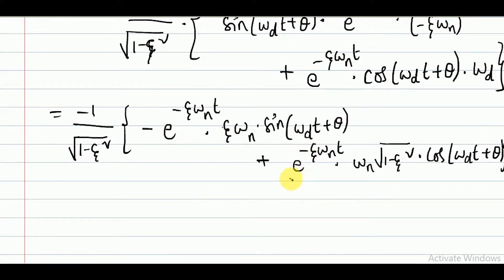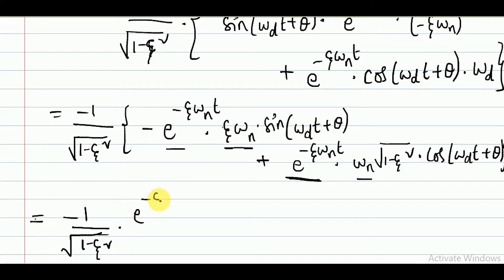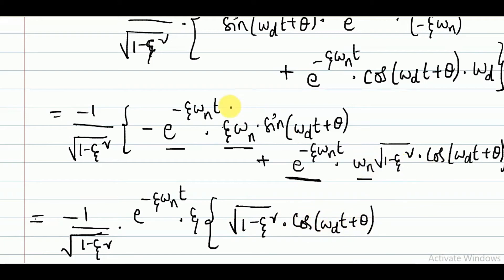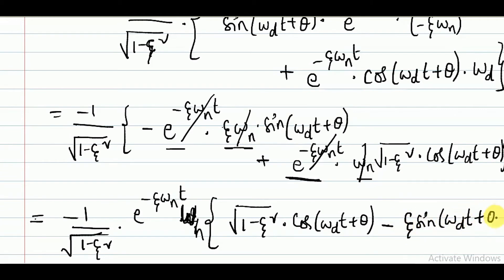Notice that e^(−ζω_n t) and ω_n are common to both terms, so we take them out as a factor. After factoring: −1/√(1−ζ²) · e^(−ζω_n t) · ω_n · [√(1−ζ²) · cos(ω_d t + θ) − ζ · sin(ω_d t + θ)].